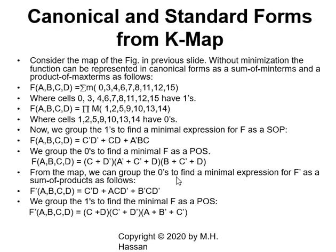For F', if we group the 0s we find the minimum expression for F' as SOP: C'D + ACD' + B'CD'. We do the opposite — grouping the 1s to find the product of sums — giving C + D, C' + D, A + D' + C'. Without using Boolean algebra or De Morgan's theorem, we can find all values from the map in canonical and standard forms for both F and F'. This is a very important concept to remember.